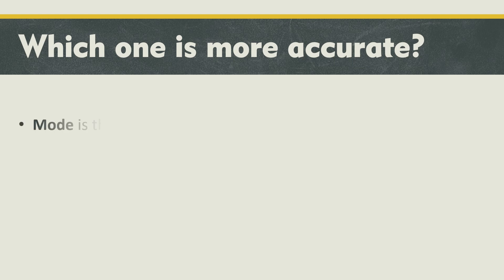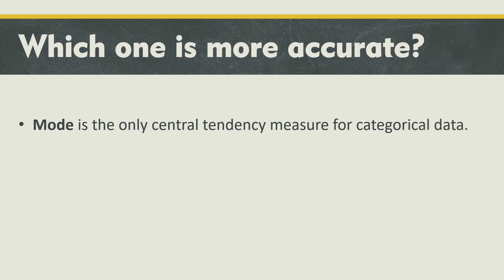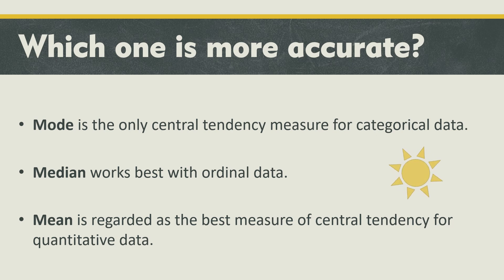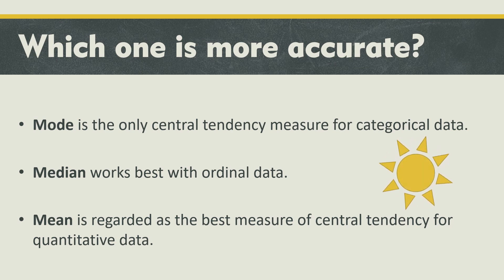Which one is more accurate? Mode is the only central tendency measure for categorical data. Median works best with ordinal data. Mean is regarded as the best measure of central tendency for quantitative data. So whenever data is divided into categories use mode; if data is ordinal, arranged in an order, use median; and if you have quantitative data, use mean.